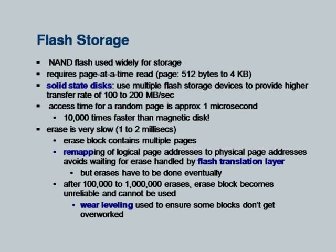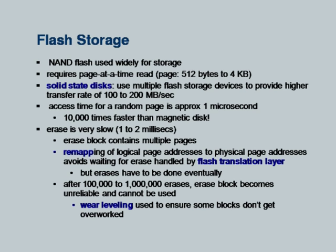Flash memory is becoming increasingly common. All of us use pen drives or USB keys — they are ubiquitous and very cheap. However, a typical USB stick's data transfer rate is limited — of the order of a few megabytes per second — which is much slower than a hard disk that can transfer at 50 to 100 megabytes per second. What people are using now is something called a solid state disk, which has a number of flash memory pieces running in parallel, giving very high bandwidth of 100 to 200 megabytes per second or even faster.